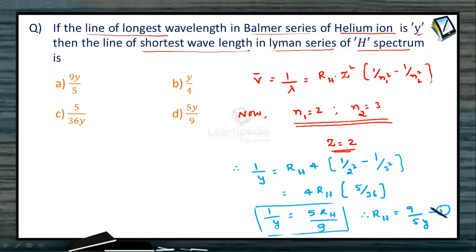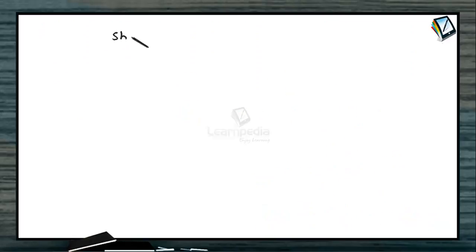But what is that we are asked to find the shortest wavelength in Lyman series of hydrogen spectrum? So we need shortest wavelength for Lyman series and in hydrogen spectrum.